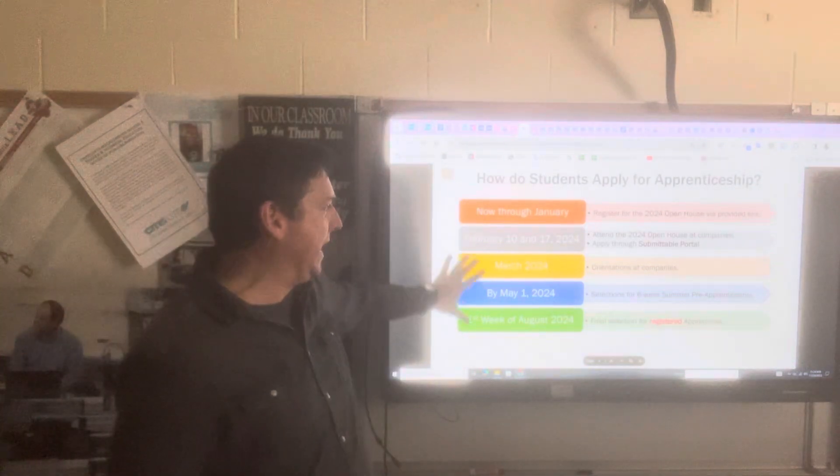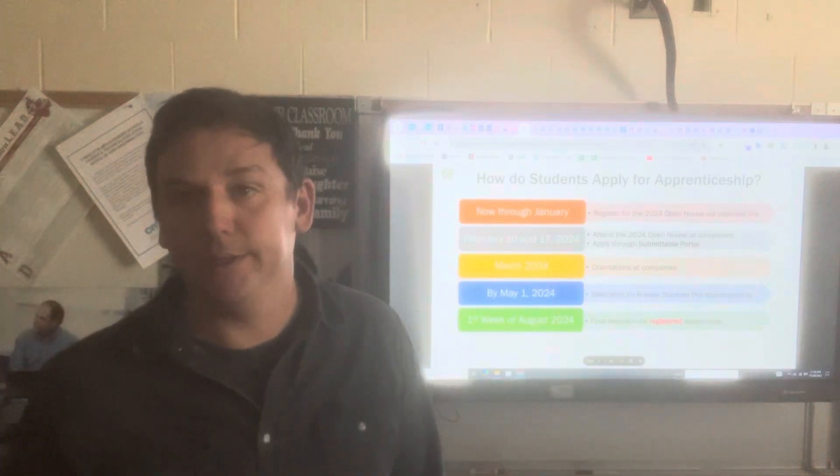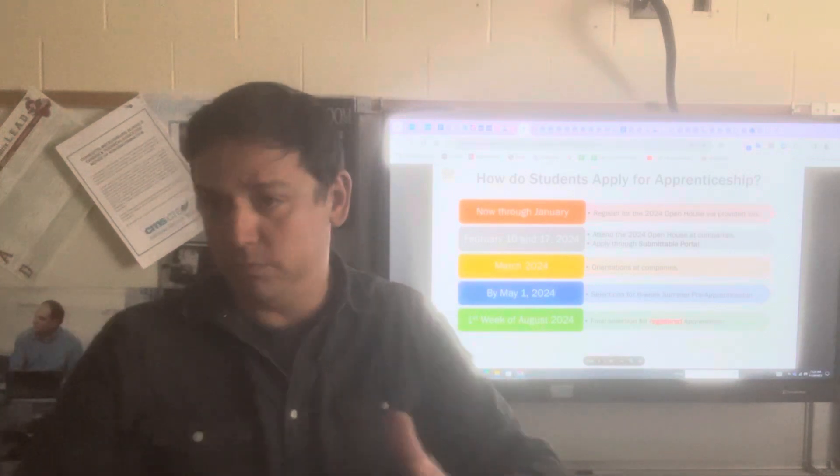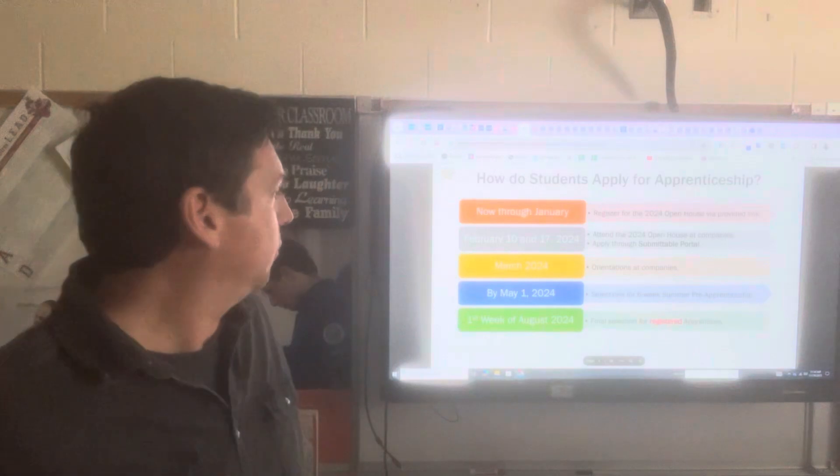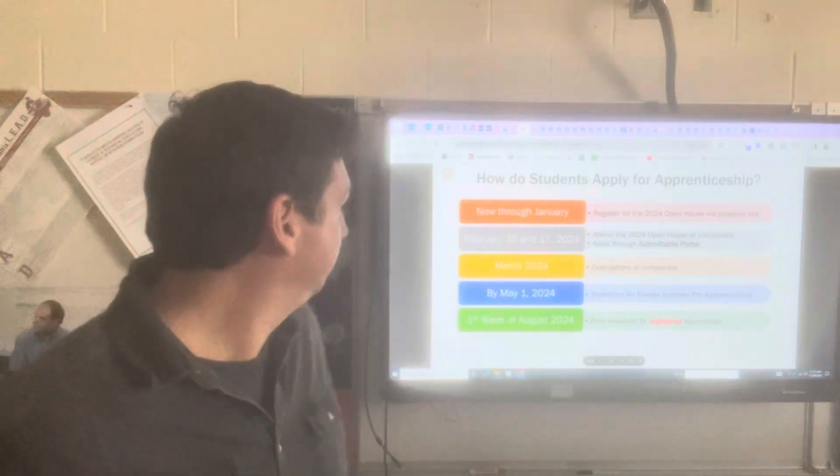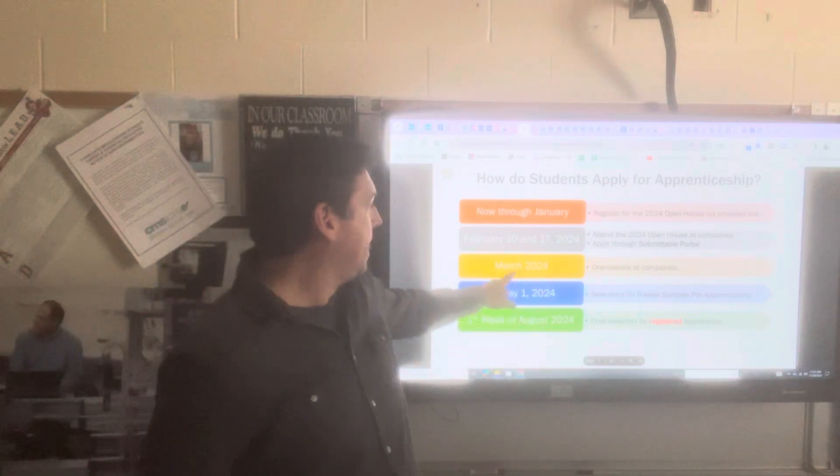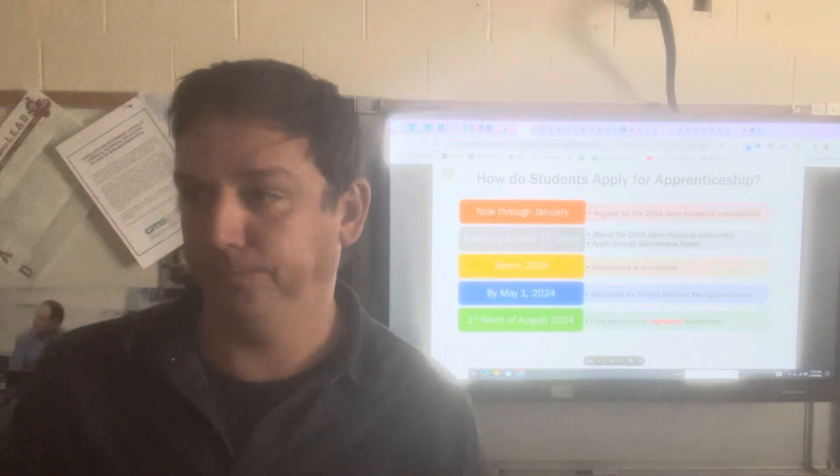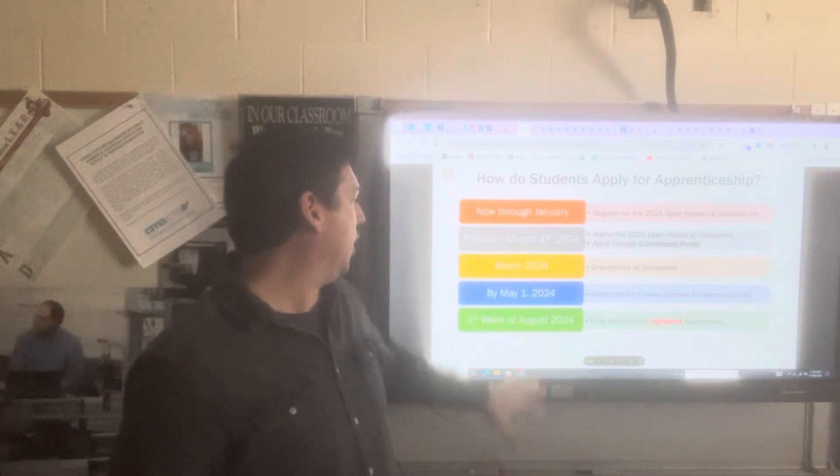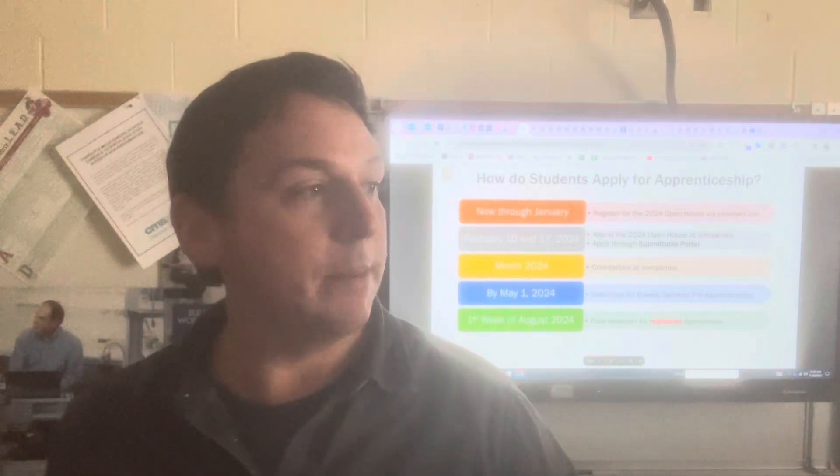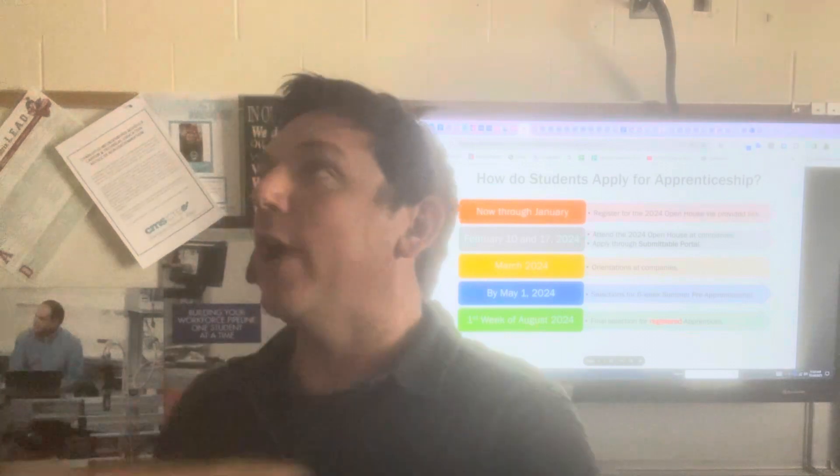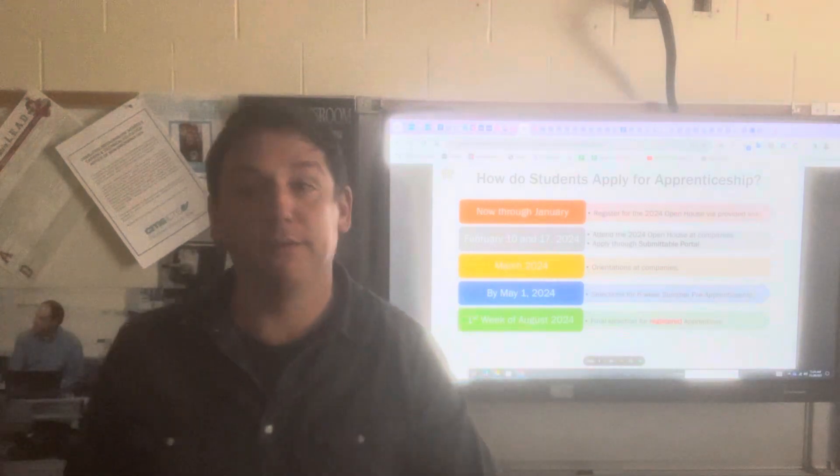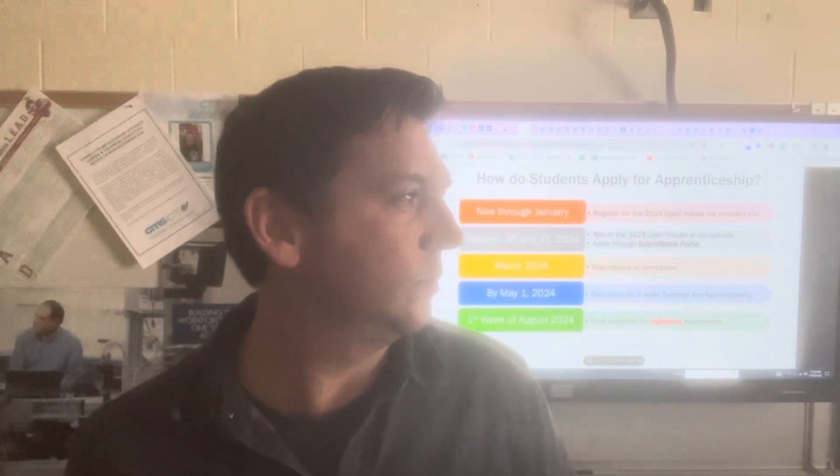So the big dates are February 10th and 17th, the Saturday mornings, in which you and your parents are invited to tour these companies. You can tour all of them or just the ones you're interested in. We've got alumni at all of them. So if that goes well, then you'll be invited to orientation. If that goes well, you'll be invited to a six-week summer paid pre-apprenticeship opportunity. If that goes well, then the final selections of the apprentices will happen.